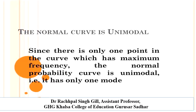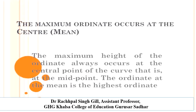The next property is that the normal curve is unimodal, meaning it has only one mode. Since there is only one point in the curve which has the maximum frequency, the normal probability curve is therefore unimodal and has only one mode. The maximum ordinate occurs at the center — generally at the mean point. The maximum height of the ordinate always occurs at the central point of the curve, and the ordinate at the mean is the highest ordinate.